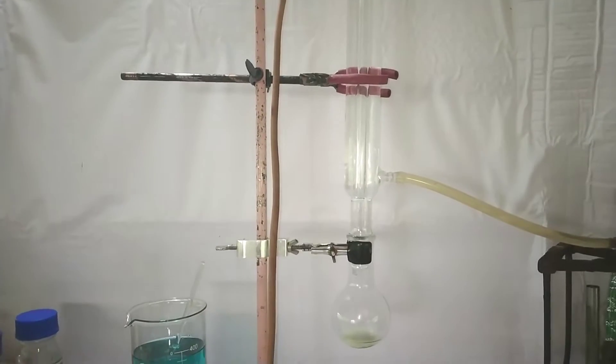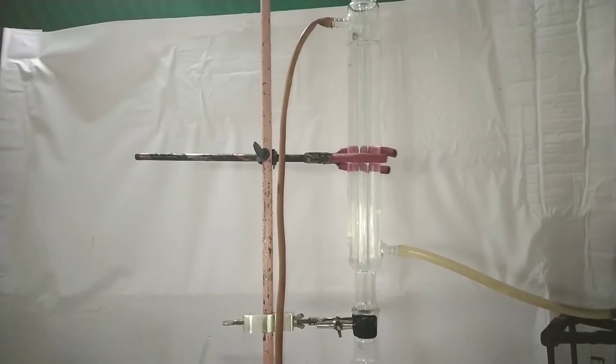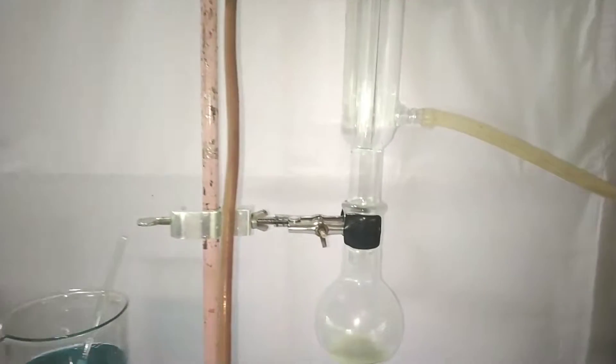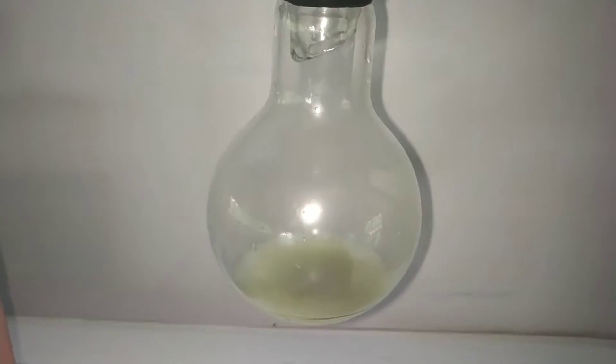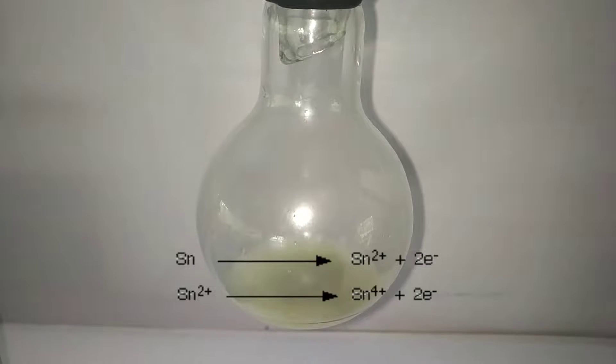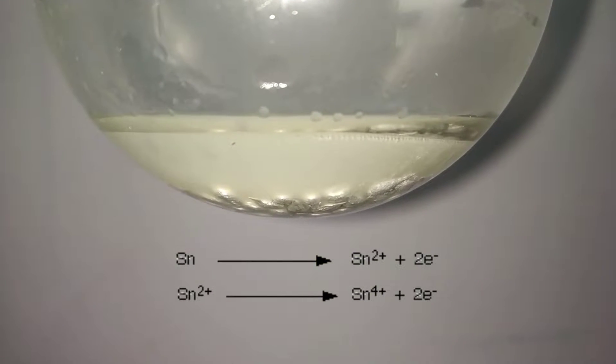This is the whole setup of the reflux. You can see that in the flask a vigorous reaction has already started to take place. Tin metal reacts with the acid forming tin 2+ and tin 4+ releasing electrons.